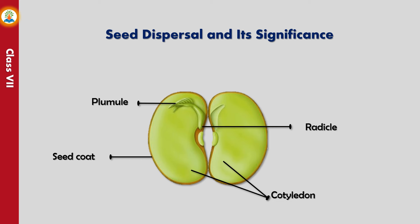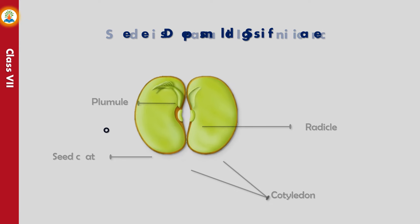A plant produces a large number of seeds that grow into new plants. If the seeds get scattered only around the plant, they will not be able to grow since each one of them will compete for space, sunlight, and minerals. Due to lack of these requirements in a limited space, they may die. Therefore, it is necessary for seeds to get dispersed over a large area. The agents for seed dispersal in nature are air, water, animals, and self-explosion.